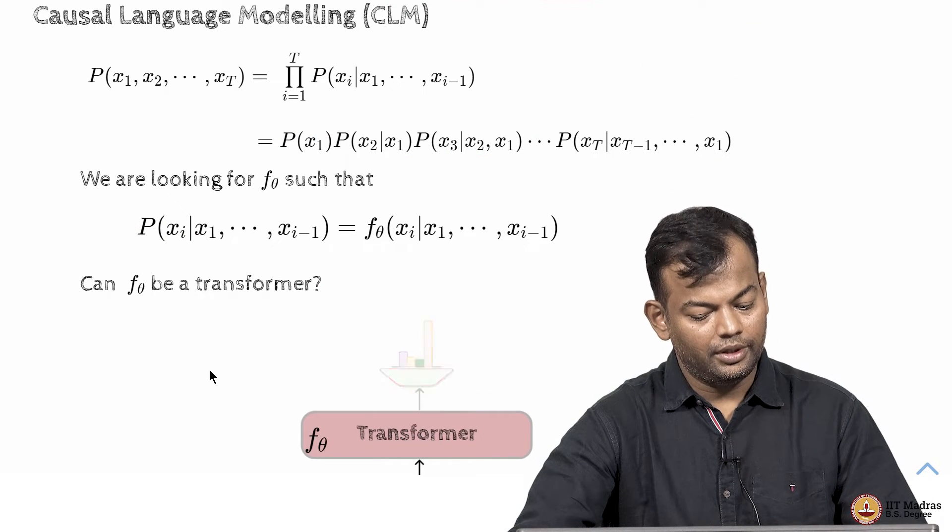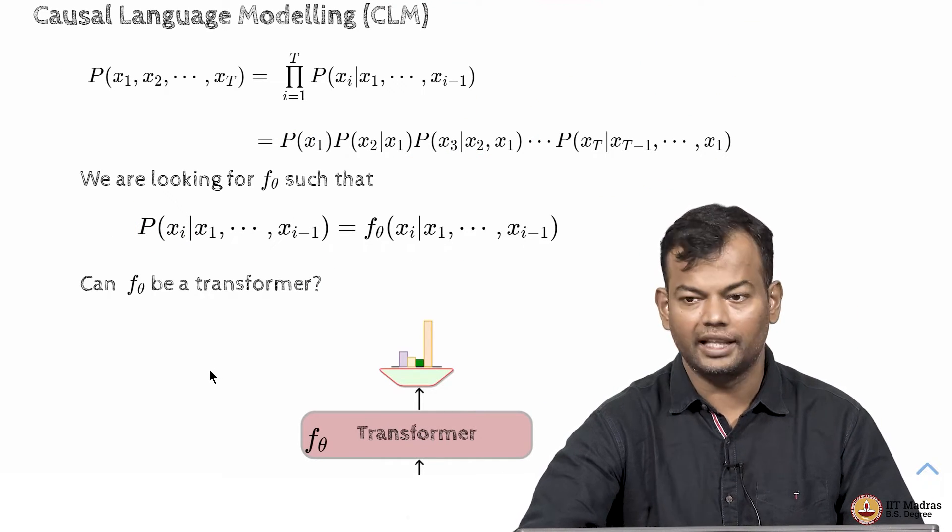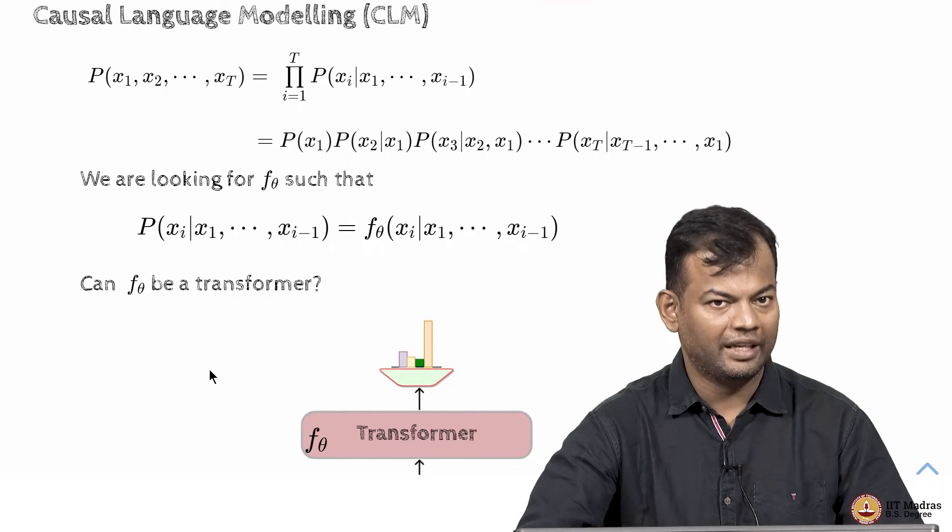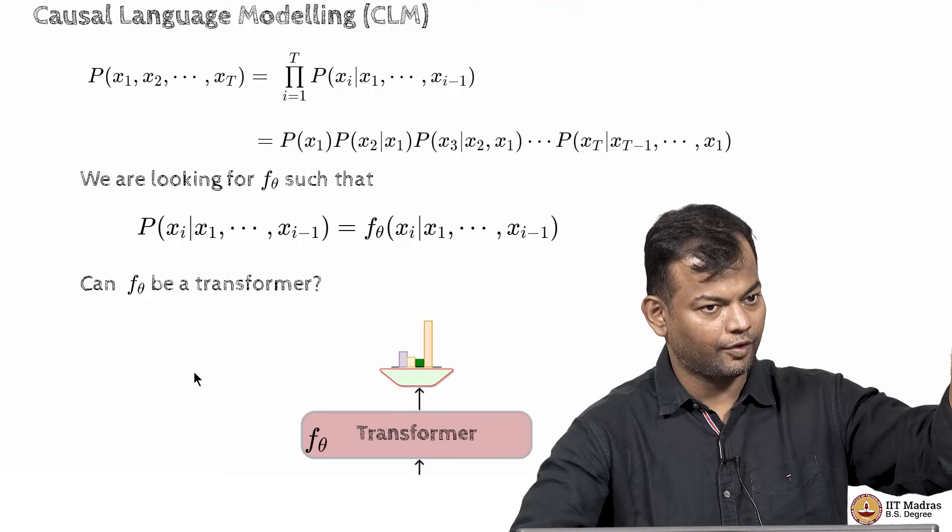Can f theta be a transformer? Yes. It could take the first i minus 1 words and then give you the probability of the ith word. Right? So, that is how we have connected everything that we have learned so far. Last lecture we learned transformer.